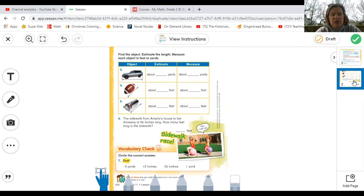Okay. About how many yards do you think your car is or your parents' car? A football. If you don't have a football, just do a regular playground ball. Okay. What about a mailbox? Okay. And then number six, the sidewalk from Amelia's house to her driveway is 96 inches long. How many feet long is the sidewalk? We'll go ahead and measure that. And then the vocabulary check.